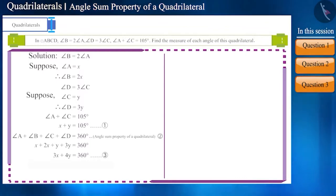Friends, we can write equation 3 like this as well. Now, by placing the value of equation 1 in it, we can find the value of Y. We got Y equal to 45 degrees.